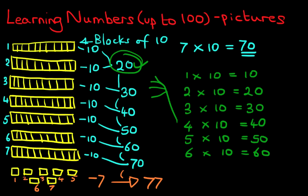1, 2, 3, 4, 5, 6. 7 times 10 is 70. Then we've got 8 times 10, 80.